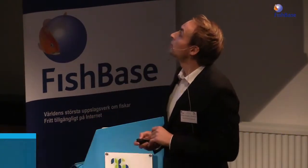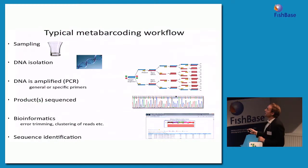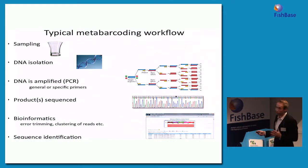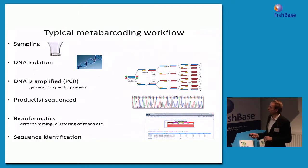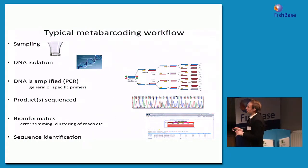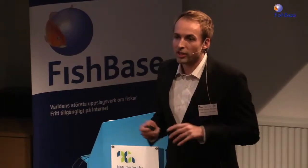So very briefly: how do we work with this metabarcoding approach and environmental DNA? We take a sample — it could be a shot glass of water. We isolate the DNA and use either species-specific primers or generic metabarcoding primers to amplify specific regions of the DNA. Those PCR products are sequenced on massive sequencing platforms. Then there's a lot of bioinformatics work: trimming sequences from errors, clustering the reads into taxonomically meaningful groups or MOTUs — molecular operational taxonomic units — and finally making taxonomic assignments at the species level or whatever taxonomic level we can reach.